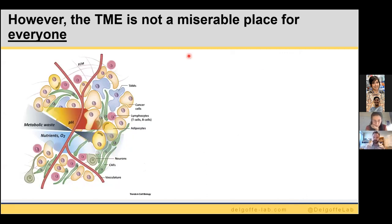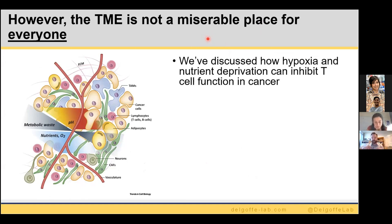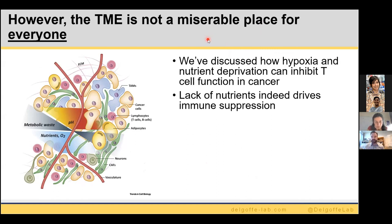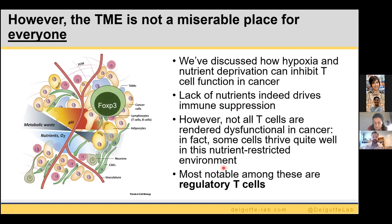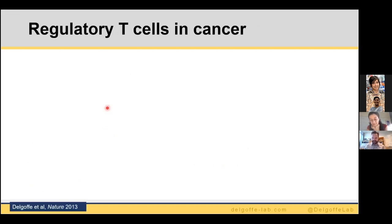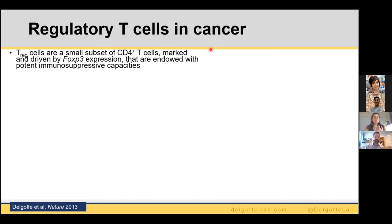The tumor microenvironment is not a miserable place for everyone. Hypoxia and nutrient deprivation can certainly inhibit conventional T-cell function, and we can model this in vitro. However, not all T-cells are rendered dysfunctional — some cells thrive quite well in this restricted environment. Most notable among these are regulatory T-cells. I spent my training understanding Treg cells, and while I took a brief diversion into CD8s, my love is for these very interesting cells.